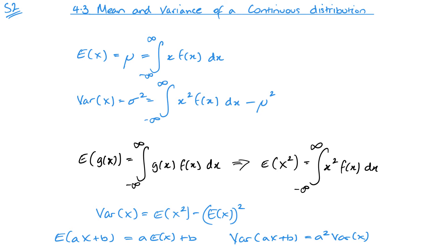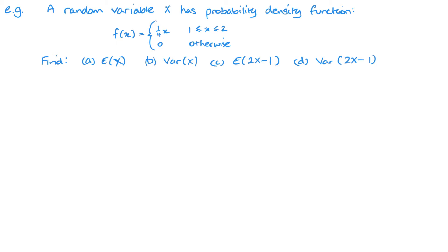Without further ado, let's get into a couple of examples, as I think that's where everything starts to make more sense. Nice easy one to get us started. Finding that mean, that E of x, all we need to do is integrate, and we're going to multiply x by our function, so quarter x multiplied by x becomes a quarter x squared.